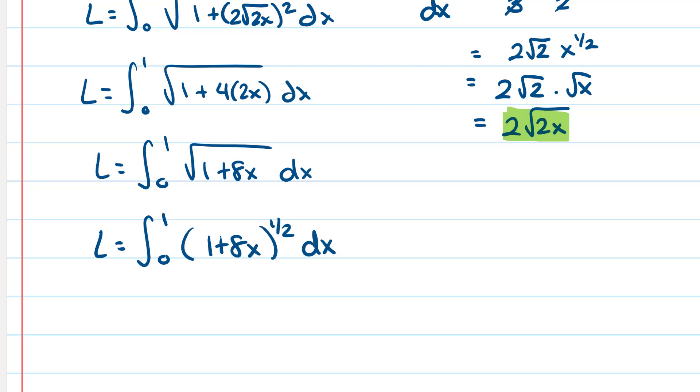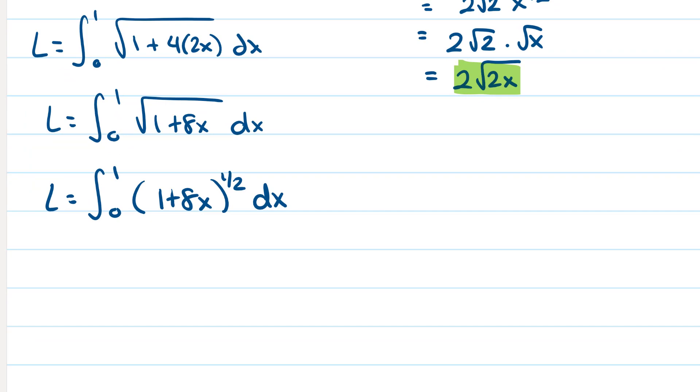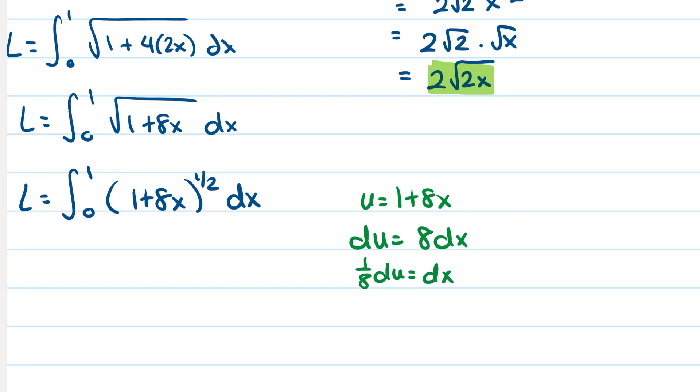Now we're going to need a u sub here. So back from calc AB, we have u is 1 plus 8 x. So du is going to be 8 dx. So 1 eighth du is equal to dx. And then don't forget, if we do a u sub, we've got to change our limits.